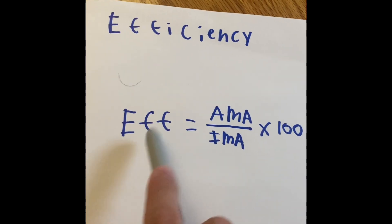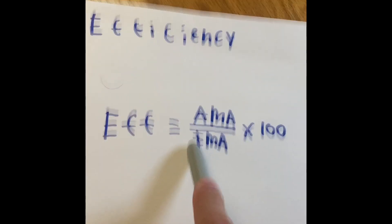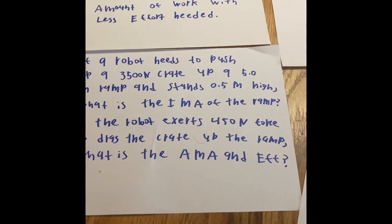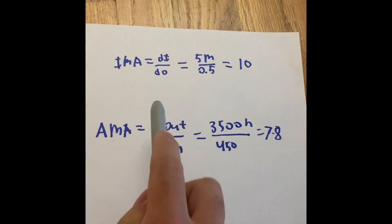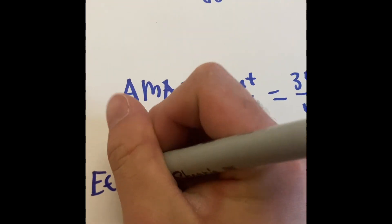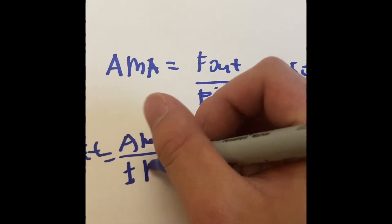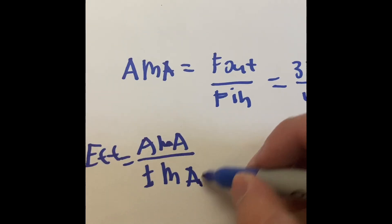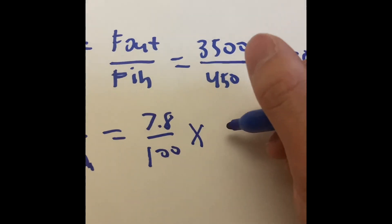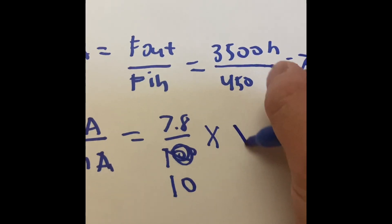So the efficiency is the actual mechanical advantage, divide that by the ideal mechanical advantage, multiply by 100. So if we do the math over here, wait, we have the math right here. So we have the AMA divided by the IMA. So the EFF equals AMA, divide that by the IMA. And that is going to be equal to 7.8 divided by... no, no, no, no. 7.8 divided by 10. Multiply by 100.